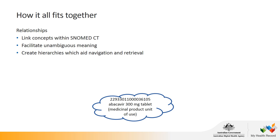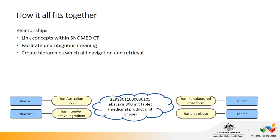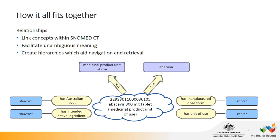Now we'll cover relationships. Relationships are links between concepts within the AMT and serve two purposes. One is to facilitate meaning by holding atomic bits of meaning. For example, Abacavir 300 milligram tablet has four attribute relationships: it has Australian BOSS of Abacavir, has intended active ingredient of Abacavir, has manufactured dose form of tablet, and has unit of use of tablet. Another reason for relationships is to create hierarchies, or a polyhierarchical structure, to aid navigation and retrieval. These are called ISA relationships, or supertype-subtype relationships — a concept can have multiple ISA relationships, which is how you get a polyhierarchy in SNOMED CT.